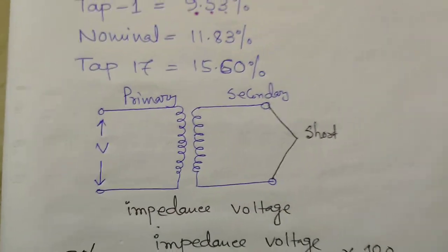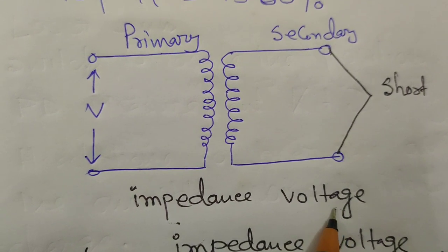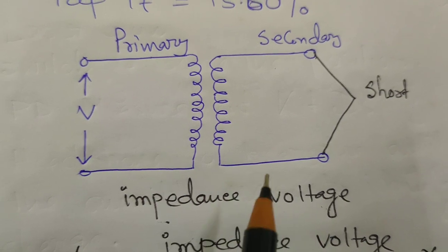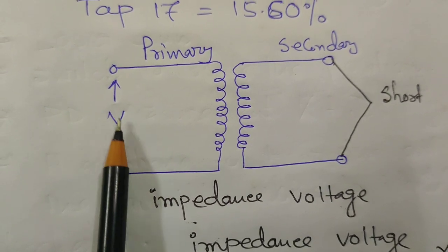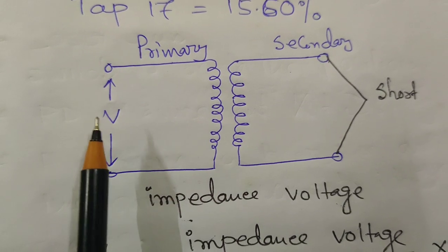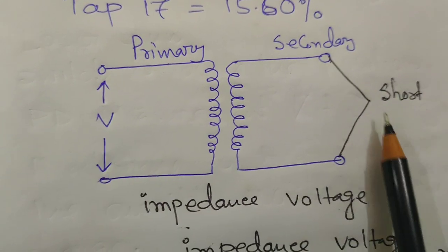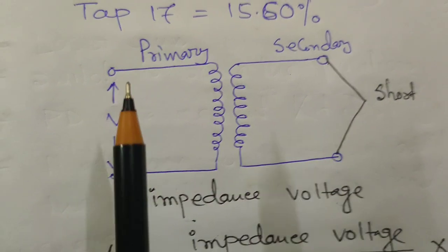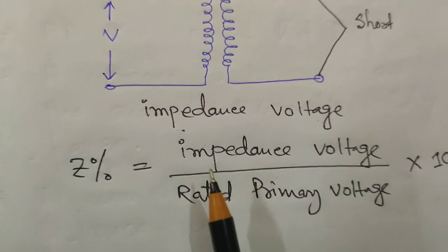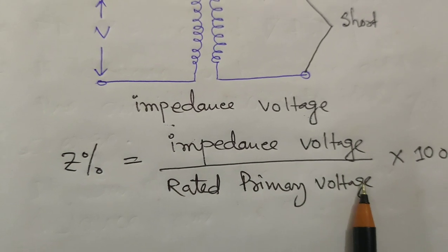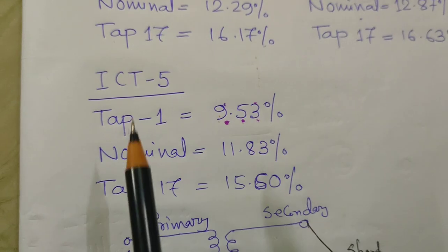Now let's discuss what percentage impedance is. First, you have to identify the impedance voltage. To calculate the impedance voltage, you short the secondary side of the transformer and apply a minimum voltage to the primary side. When the rated current of the transformer flows at the secondary side, that applied voltage is considered the impedance voltage. Then you divide the impedance voltage by the rated primary voltage and multiply by 100 to get the percentage impedance.